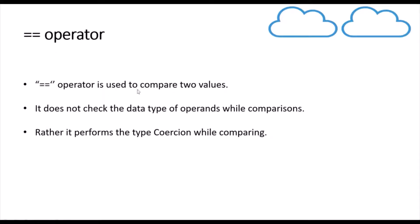The double equals to operator is used to compare two values. However, while comparison it does not check the data type of operands — it just checks the value. And it performs type coercion while comparing these operands. We have already seen type coercion in one of our previous videos, so watch that before continuing with this video.